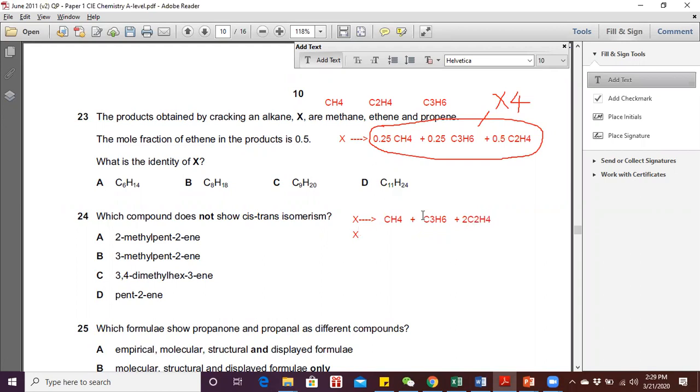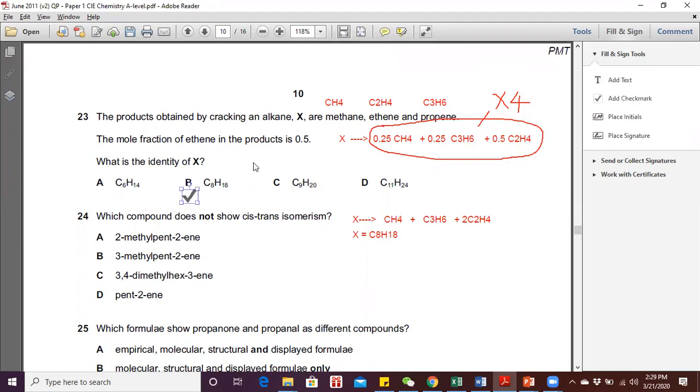From here, we can find out the total C and H from all the products. Upon calculation, we get C8H18, which makes X an octane. Therefore, the answer is B, which is C8H18.